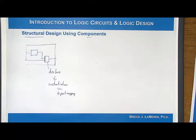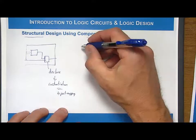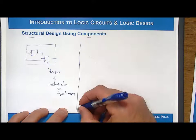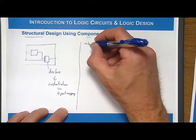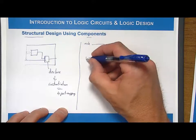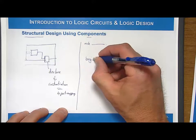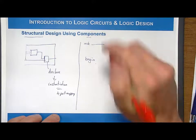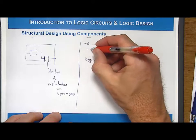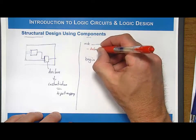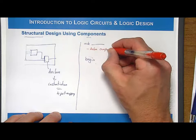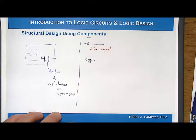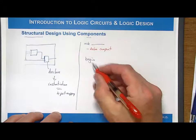So the way that you instantiate something is as follows. Remember that we come along and we say, okay, architecture, and then we have the begin statement. And up here, we are going to declare. This is where we declare the component. And then down here, we are going to instantiate it. So after the begin statement, the syntax is as follows.